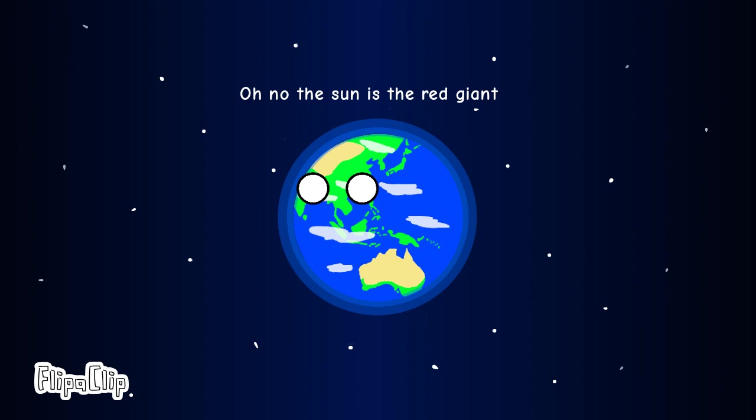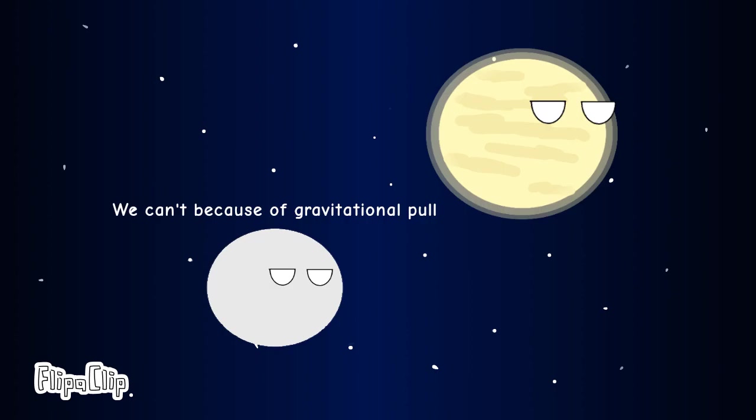Oh no, the sun is a red giant. Venus and Mercury go further away from the red giant. We can't, because of the gravitational pull.